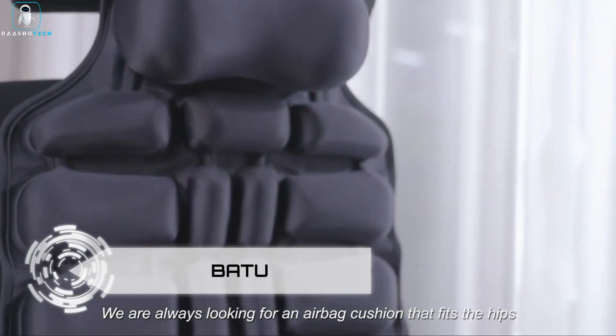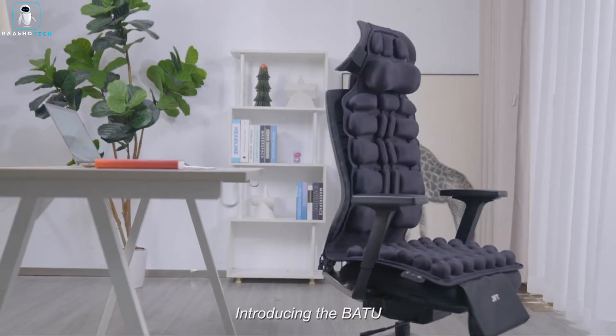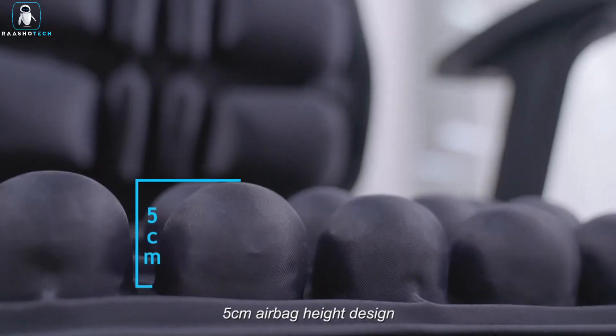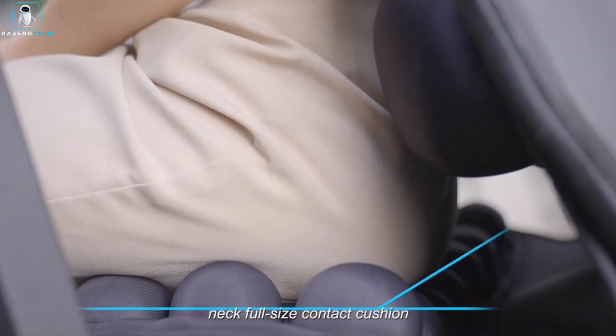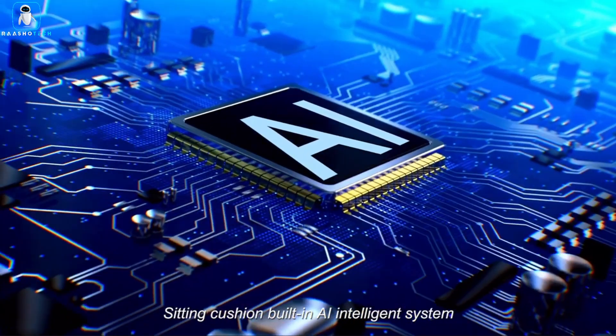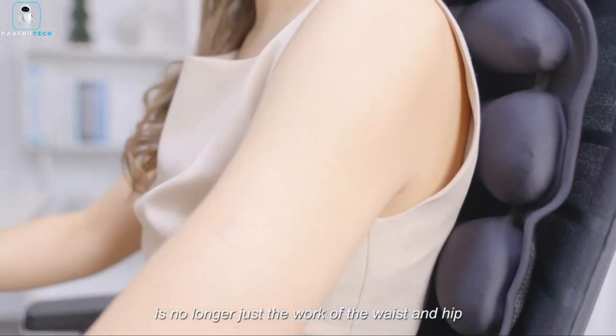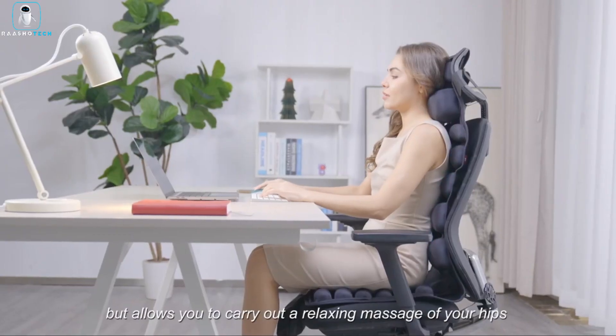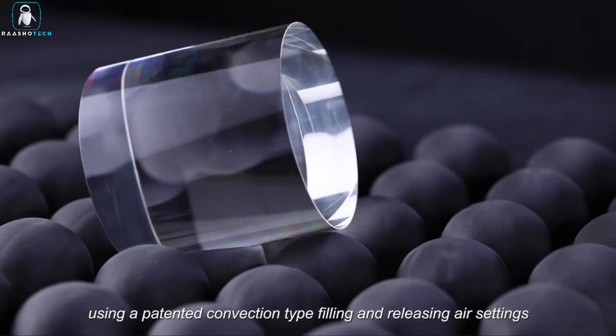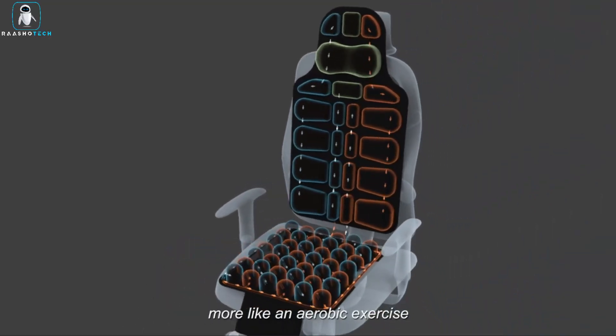Introducing Batu, your portable massage companion that brings relaxation wherever you go. This versatile marvel is not just limited to office chairs. It's your perfect companion for camping trips, too. Imagine enjoying a soothing massage amidst nature's beauty. Batu's massage feature is a game-changer, featuring 65 air cushions powered by AI automatic learning. It's not just about relaxation, it's about ergonomic support, redistributing your weight evenly for a more comfortable seated experience.